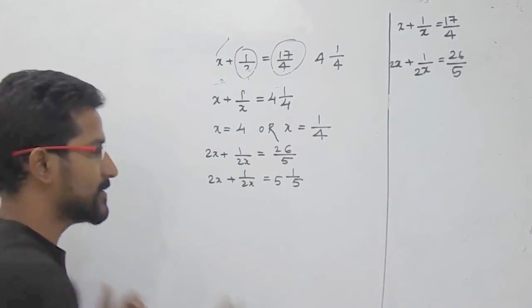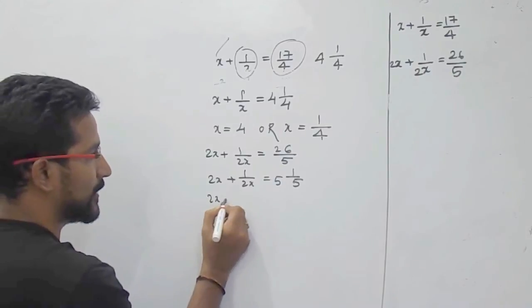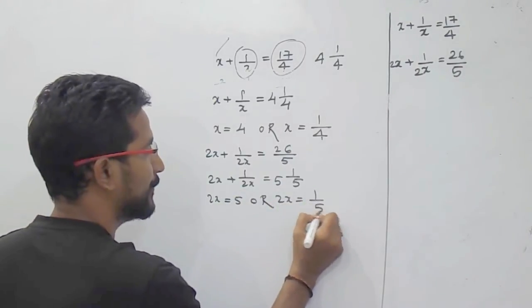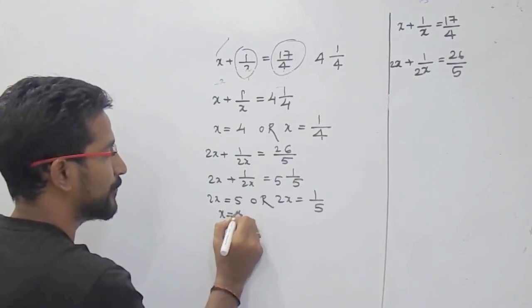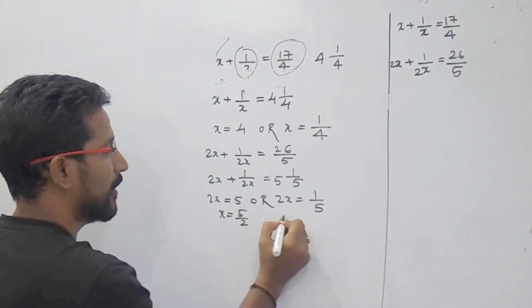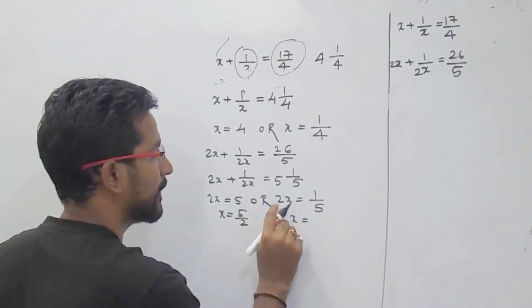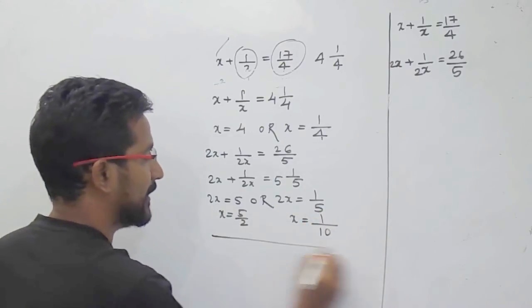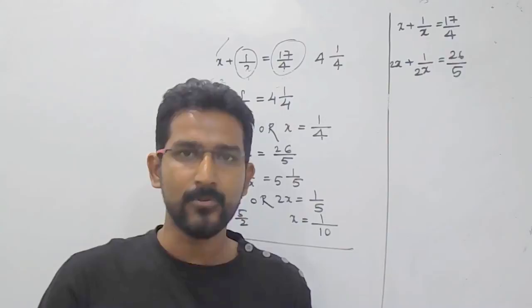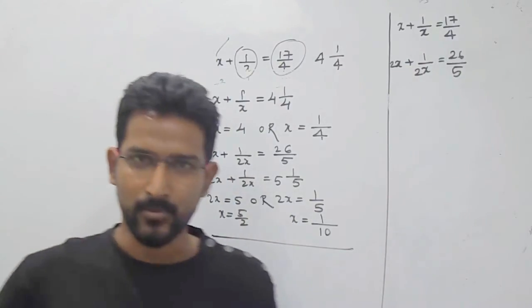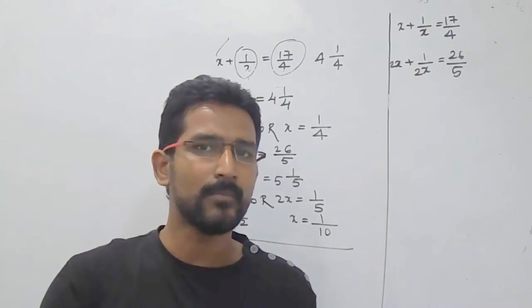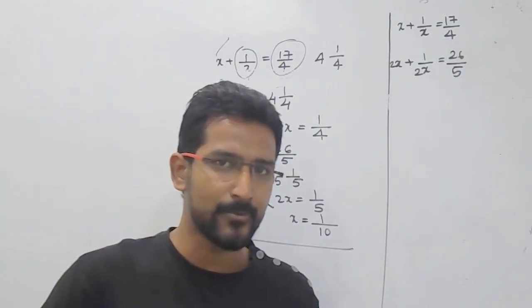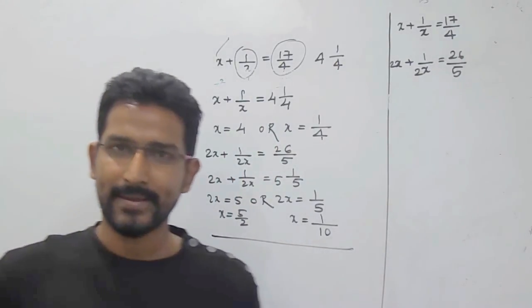So what will be our answer? Just equate: 2x equals 5 or 2x equals 1 by 5. So x equals 5 by 2 or x equals 1 by 10. And if you solve by the normal method, you are going to get the same answer: x equals 5 by 2 and x equals 1 by 10.